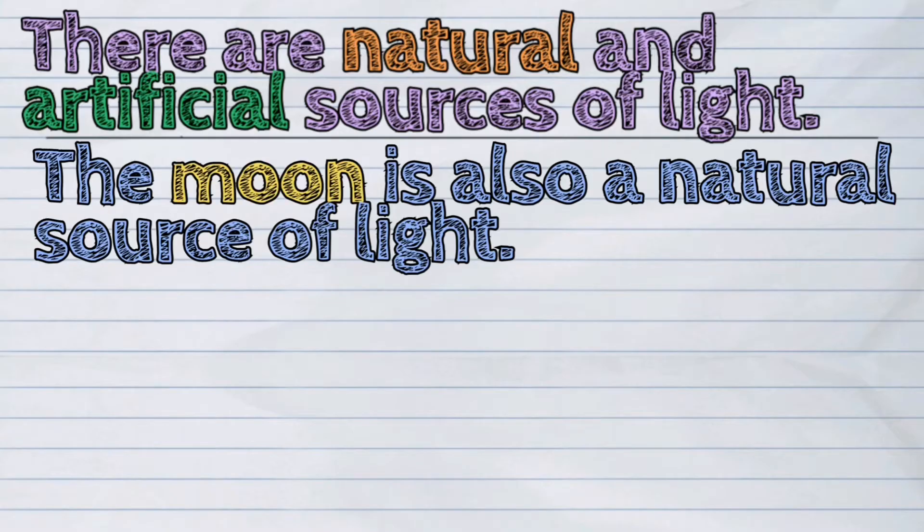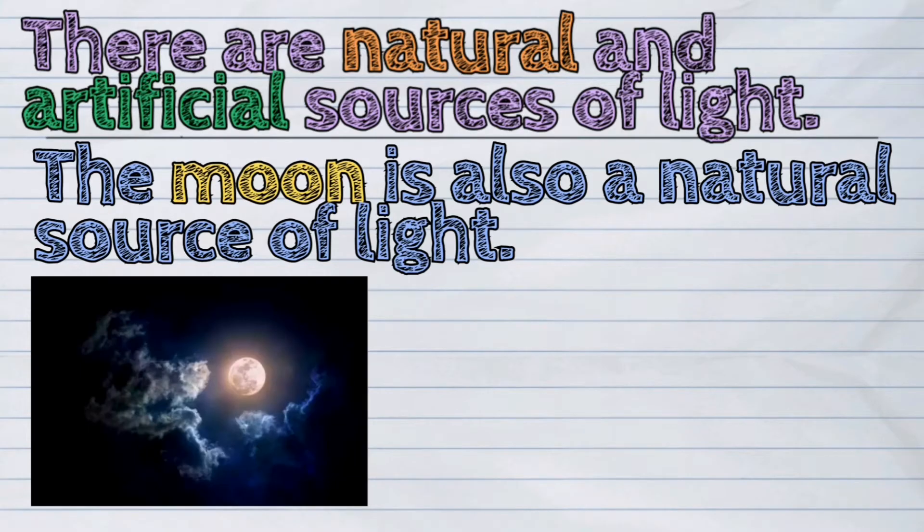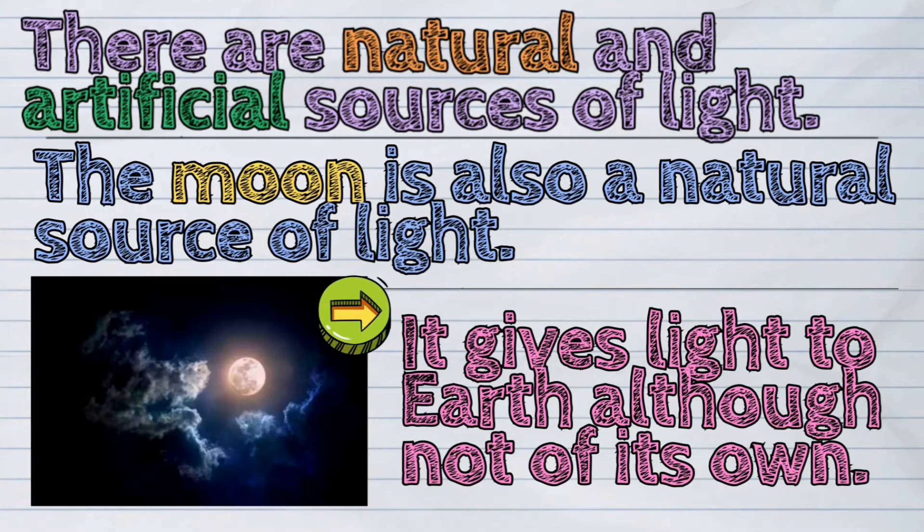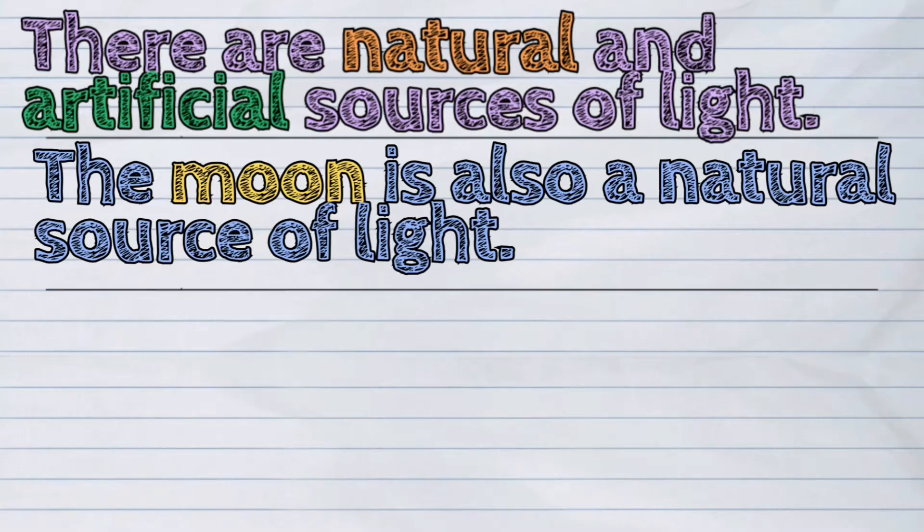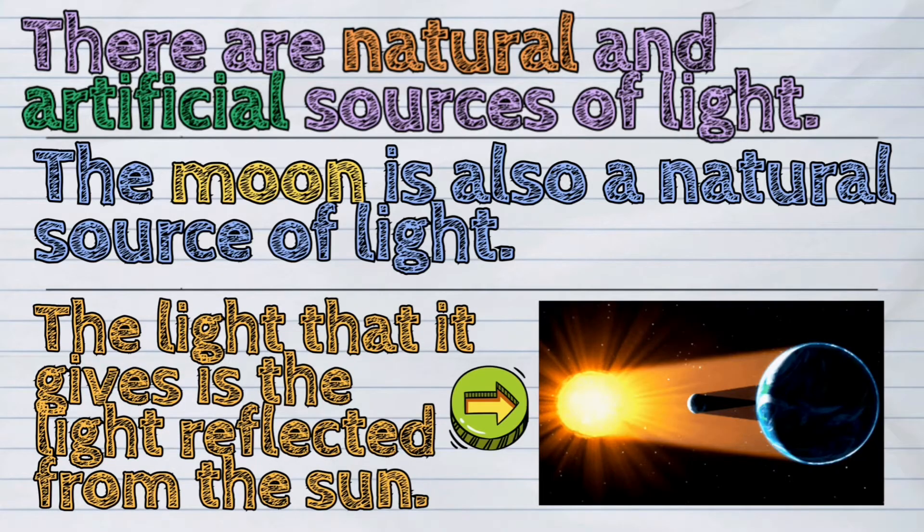The moon is also a natural source of light. It gives light to earth, although not of its own. The light that it gives is the light reflected from the sun, because the moon does not have its own light.